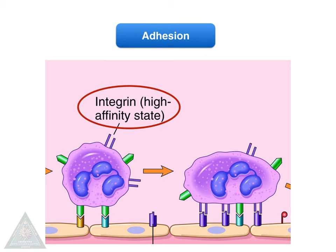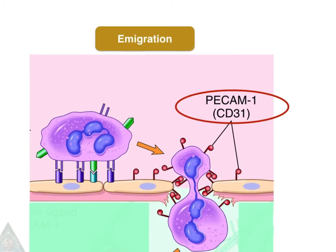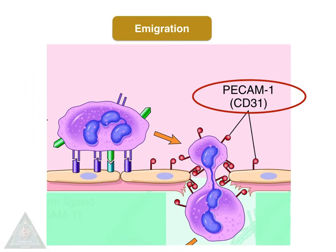From the low affinity state, the integrins turn to a high affinity state, where the cell adheres to the leukocyte surface and then emigrates through the endothelial gap through PCAM.